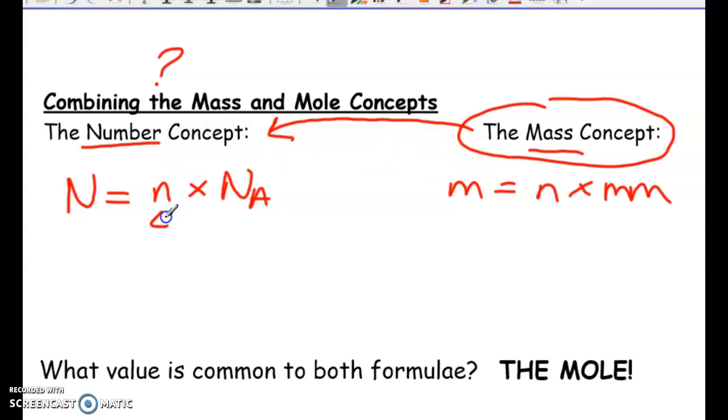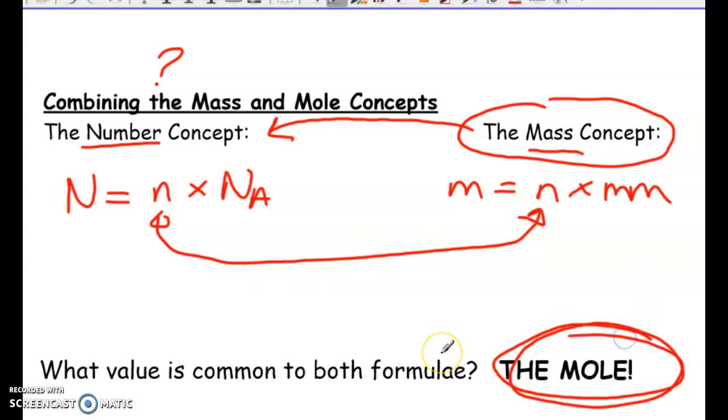So the only thing that's really common to both is the mole. So essentially, what does that mean? If you know the moles, you can go actually with any of these formulas. So if you want to solve for the number, well, if we get the number of moles, we can actually plug it in over here and solve for the number of atoms. Or vice versa, we can solve for the mass once we have the mole value from this formula.